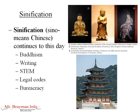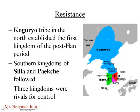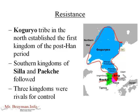Over time, Korea started to resist politically. The first main adversary of the Chinese were the Kogoruyo people, an ethnic and tribal group to the north who stretched all the way up into Manchuria — the northeastern part of modern-day China. They established the first independent kingdom of the post-Han period. Over time, the people of Pakche and Silla developed their own kingdoms in the south.